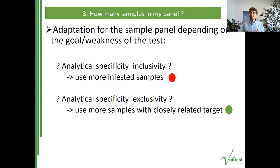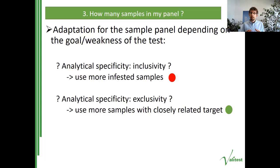This is a recommendation, but it is clear that you may need to adapt the sample panel composition depending on the intended use of the test and its potential weaknesses identified previously. For example, if you have a key question on inclusivity for analytical specificity, you can use more infested samples and fewer samples to evaluate analytical sensitivity. Similarly, if you fear difficulties related to exclusivity, you can use more samples with closely related targets to evaluate that specific criterion.